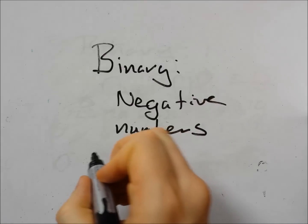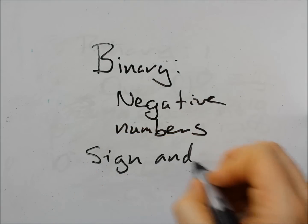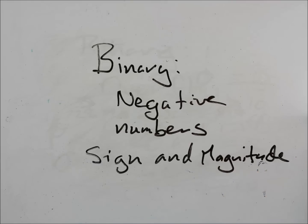The first is called sign and magnitude. Now this is exactly the same as the way that we generally do things in decimal.